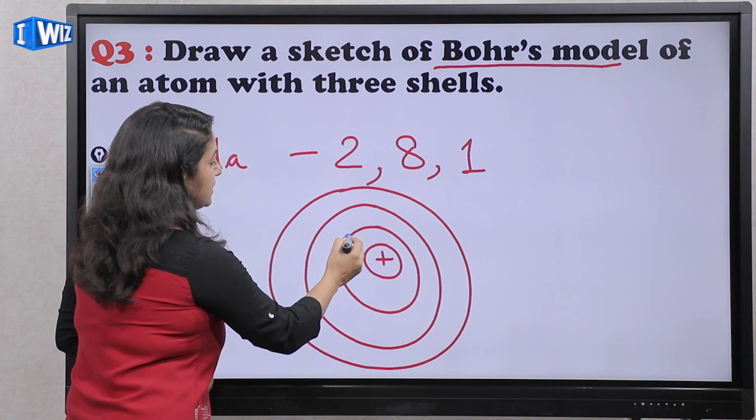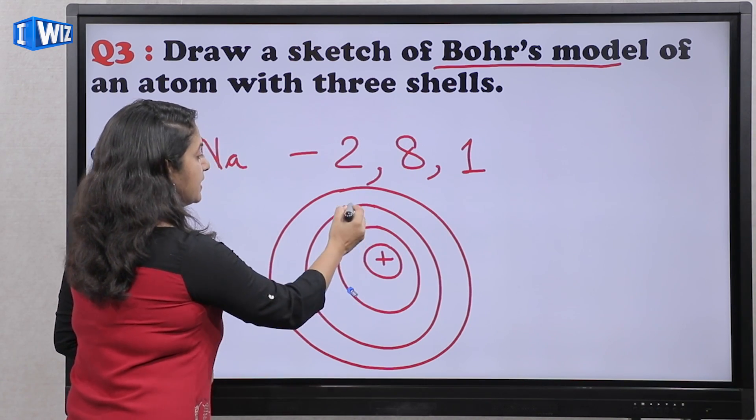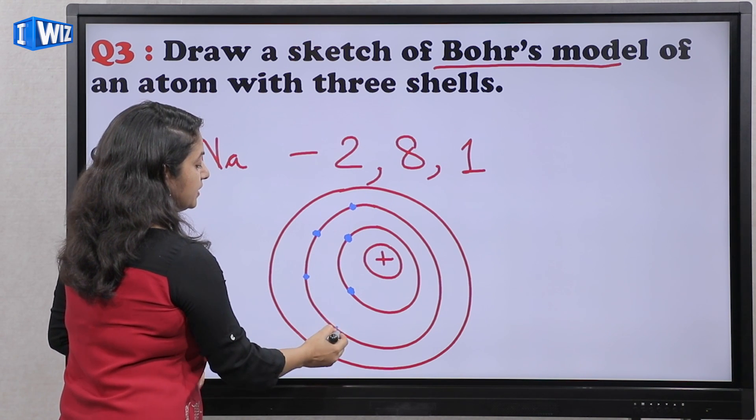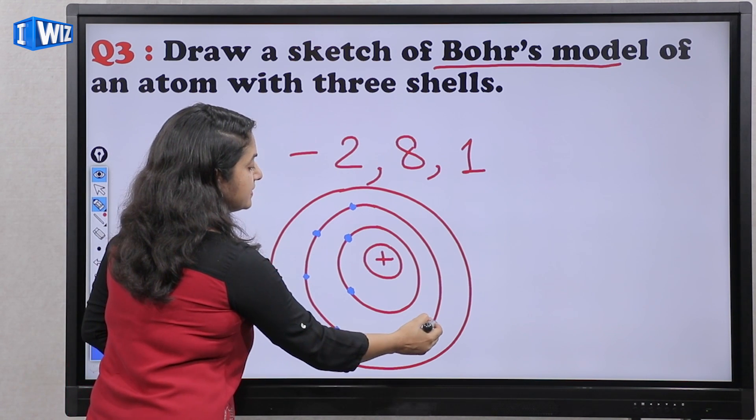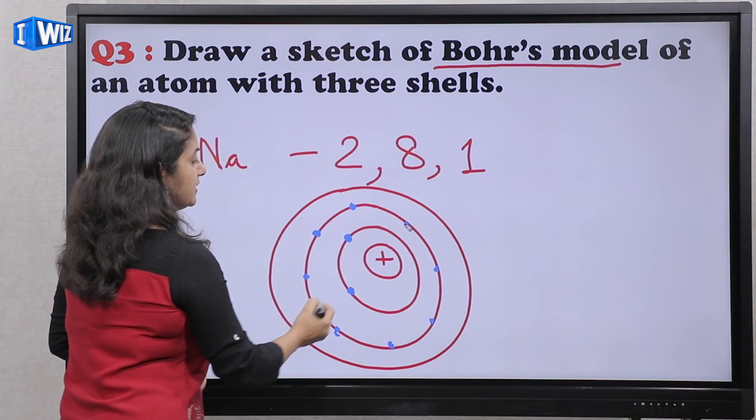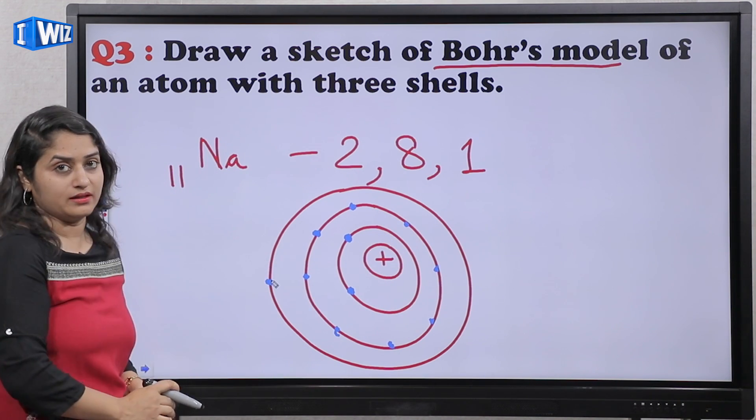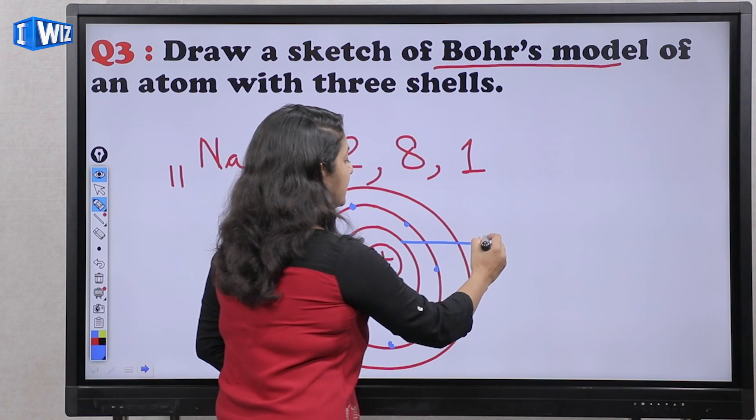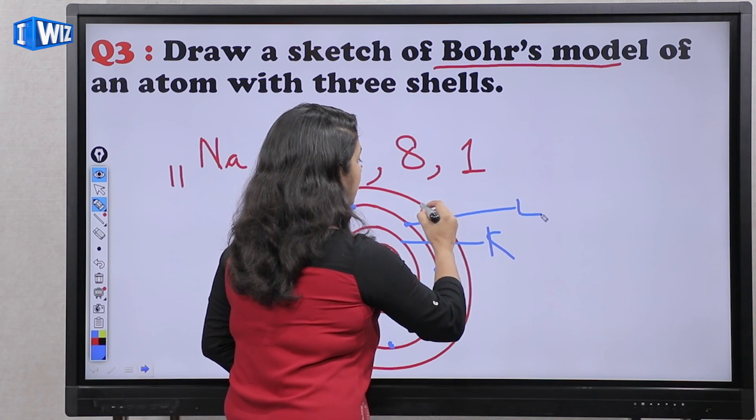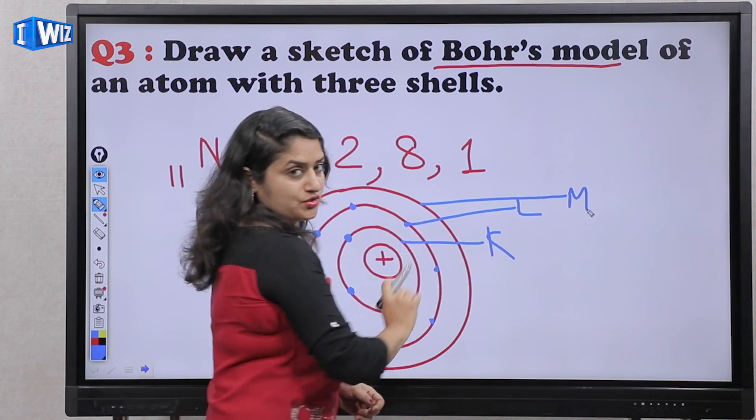First shell mein hai two electrons. Second shell mein one, two, three, four, five, six, seven, eight, and last shell mein one. First shell ko aap K shell bhi bol sakte hoon, second ko L, third ko M shell.